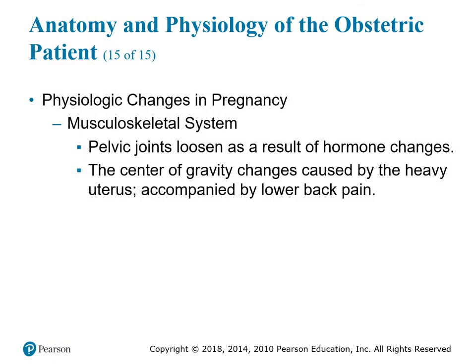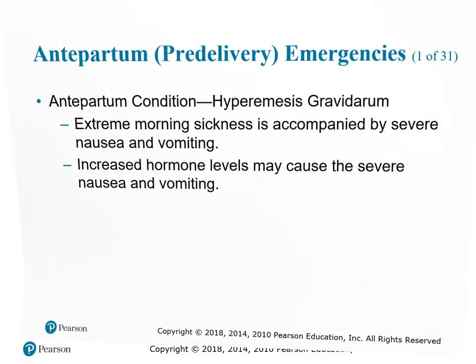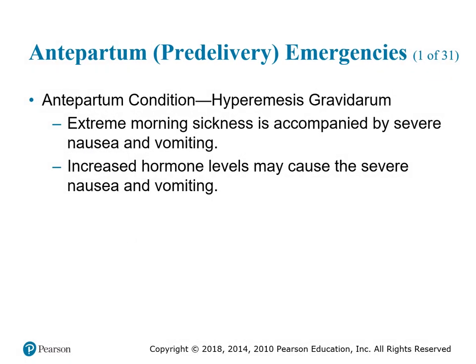In the musculoskeletal system, the pelvic joints loosen as a result of hormone changes, and the center of gravity changes due to the heavy uterus, accompanied by lower back pain. Antepartum condition: hyperemesis gravidarum, which is extreme morning sickness accompanied by severe nausea and vomiting. Increased hormone levels may cause the severe nausea and vomiting itself.